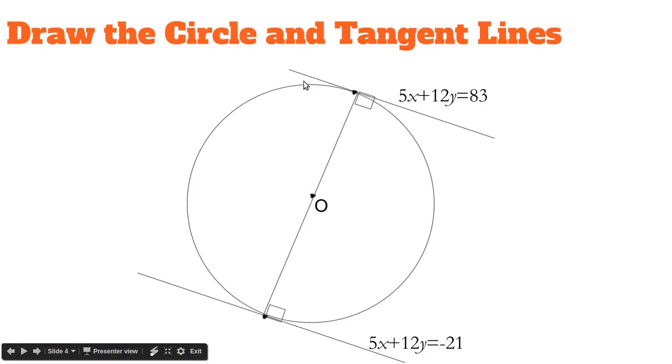That means the line halfway between 5x plus 12y equals 83 and 5x plus 12y equals negative 21 goes through the center. So the line halfway in between is 5x plus 12y equals the average of 83 and negative 21.